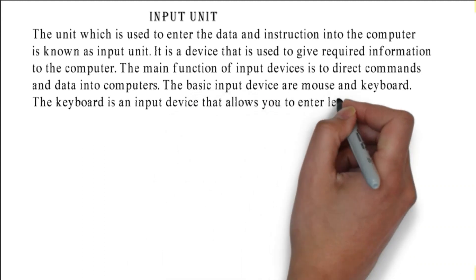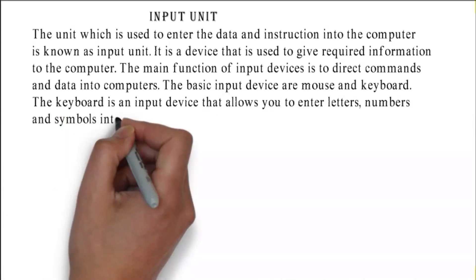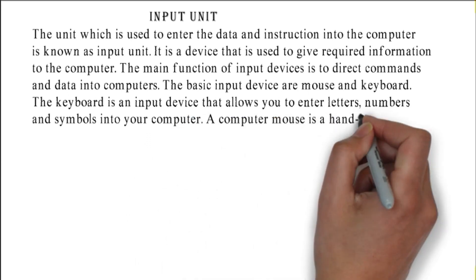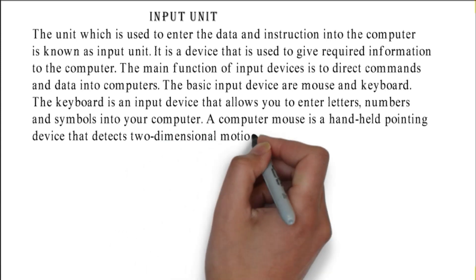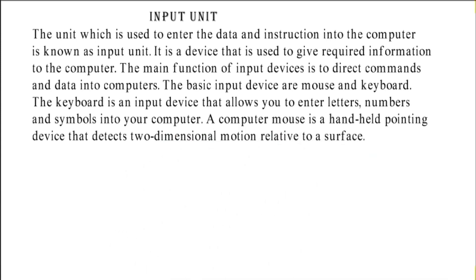The keyboard is an input device that allows you to enter letters, numbers, and symbols into your computer. A computer mouse is a handheld pointing device that detects two-dimensional motion relative to a surface.